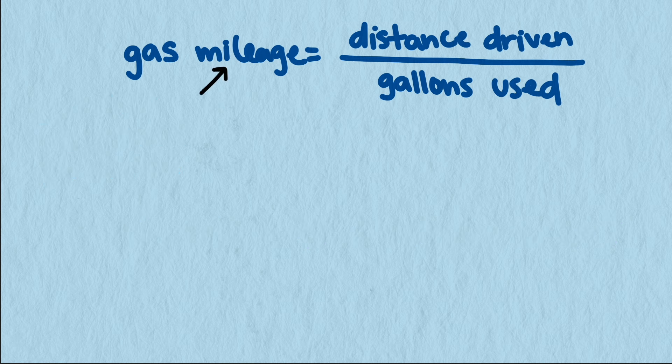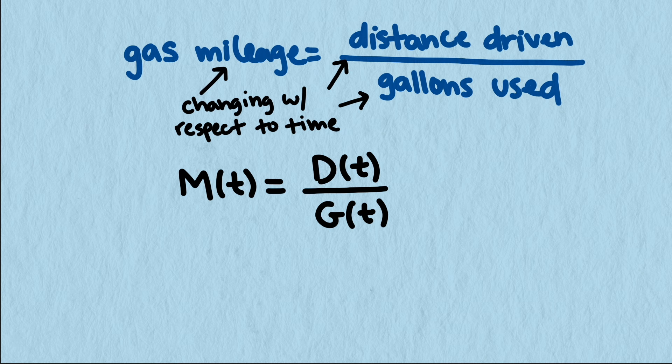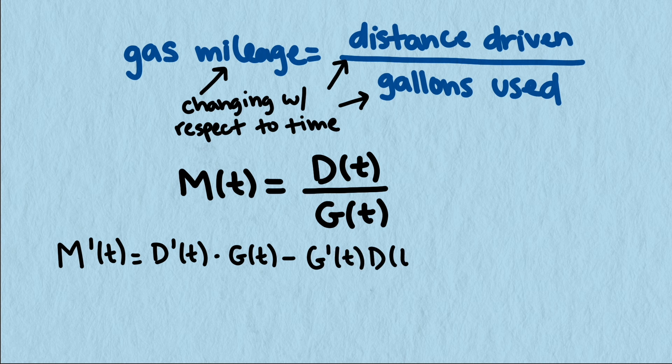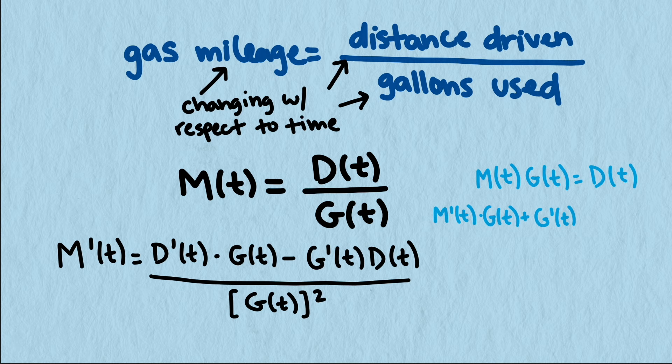Related rates starts where we assume that each quantity is changing as time changes. We can represent this by changing each quantity in our equation to be a function of time. Then we take the derivative of the whole equation with respect to time, following the rules we've learned about derivatives. In this case, I'll use the quotient rule. If you'd rather use the product rule, we could multiply both sides by g and take the derivative of g times m equals d. Either way, we get an equation that relates the rates at which these quantities are changing.